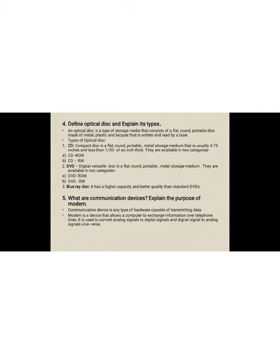Next question: define optical disc and explain its types. An optical disc is a type of storage media that consists of a flat, round, portable disc made of metal, plastic, and lacquer that is written and read by a laser. There are three types of optical disc: CD, DVD, and Blu-ray disc — and you need to write two or three lines about each of these.